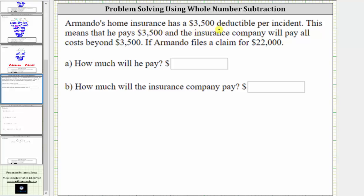Armando's home insurance has a $3,500 deductible per incident. This means he pays $3,500, and the insurance company will pay all costs beyond $3,500.